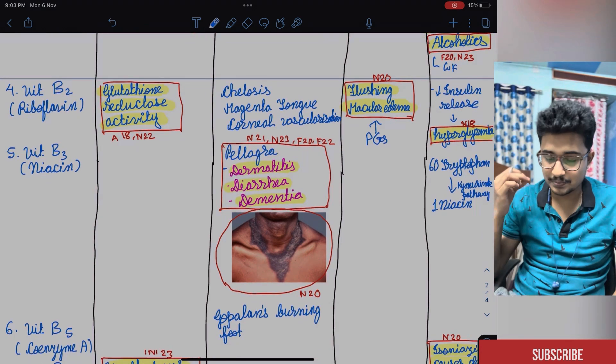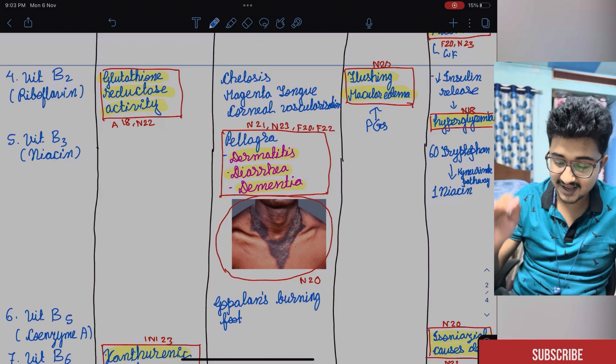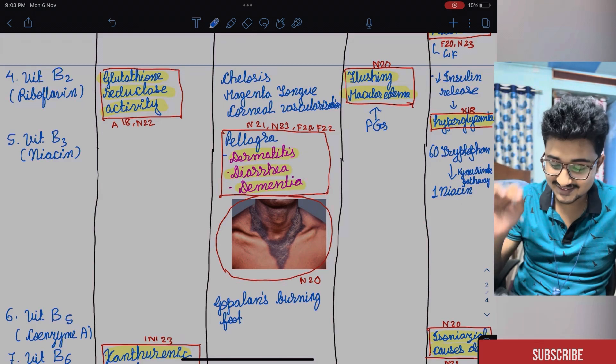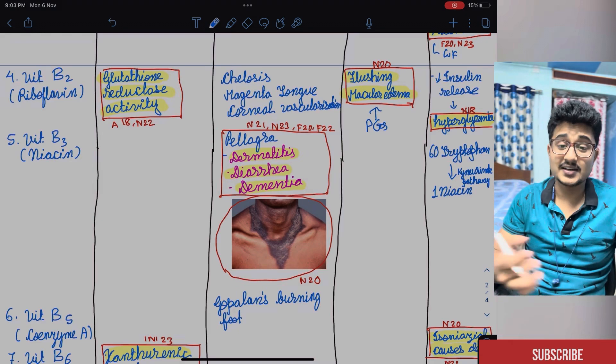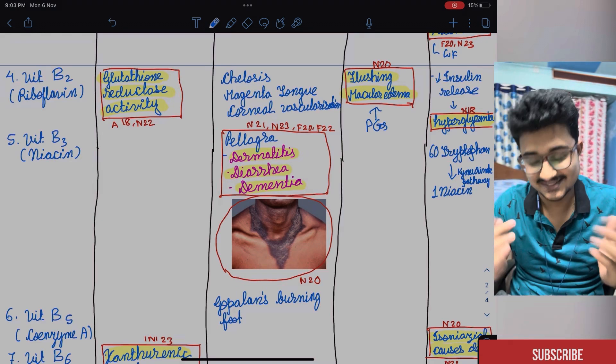And it reduces the insulin release which causes the hyperglycemia. It was also asked in AIMS. Vitamin B3, the niacin, the super duper important. Five questions have come from this niacin that is pellagra. Dermatitis, dementia, diarrhea and ultimately it leads to death.